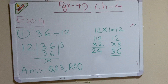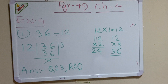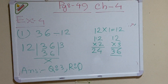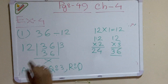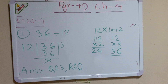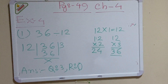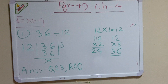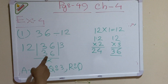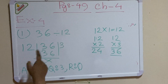Earlier I showed you how to simplify division by cutting equal zeros. Now I am showing that if the divisor is more than 10, you need to do multiplication in the rough work to build a table for that larger number and find the required multiple to divide the dividend.